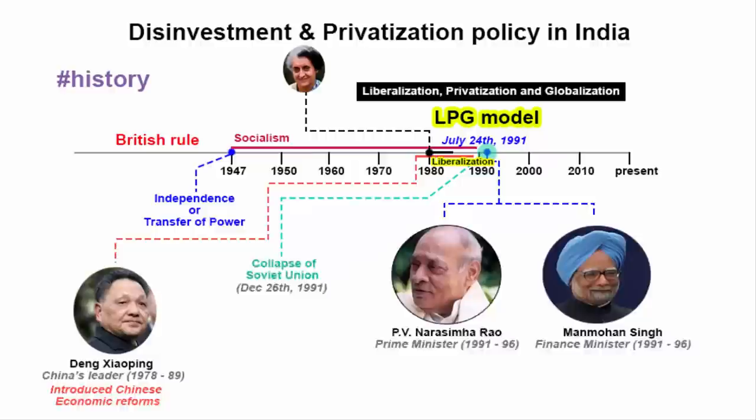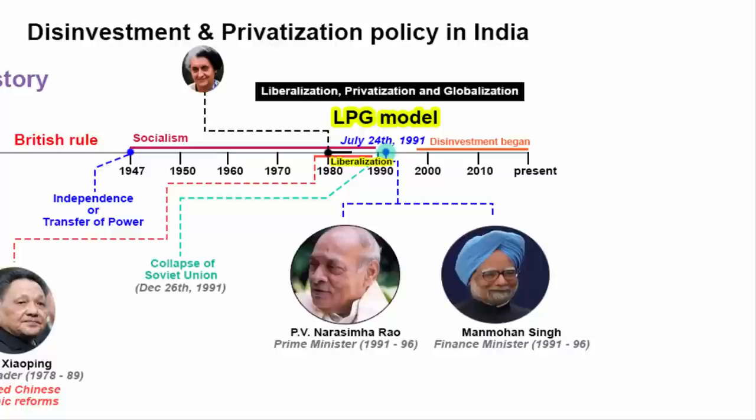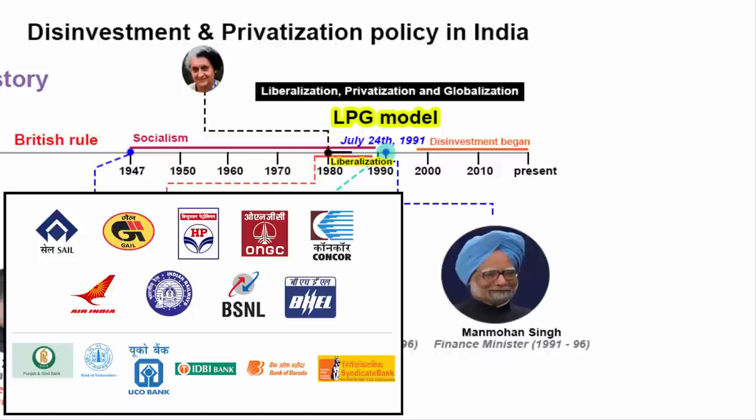Today, there are many government PSUs running at a loss. A few of them include Steel Authority of India Limited, Gas Authority of India Limited, Hindustan Petroleum Corporation, ONGC Oil & Natural Gas Corporation, Container Corporation of India, Air India, Indian Railways, BSNL, BHEL, and a few banks. Together they are known as PSUs. These PSUs are running on huge debt and causing heavy losses to the government.